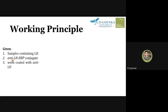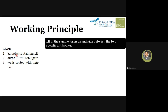The third component is wells coated with anti-LH antibody. So we have two antibodies: one is fixed to the wells, and the other is enzyme-labeled. The principle is that LH in the sample forms a sandwich between these two specific antibodies — this is the sandwich ELISA method.